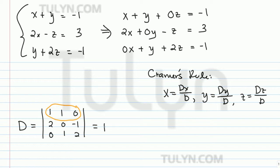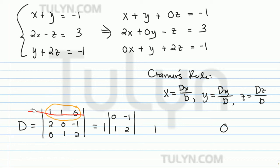How we do expansion of minors is we write down each of the elements and then their minors multiplied. To find the minor of the first term, delete its row and column, and write the 2-by-2 determinant of the numbers left over — that's the first column 0, 1 and second column negative 1, 2. For the second element, the minor is 2, 0, negative 1, 2. The third element is 0, and since 0 times anything is 0, we can just forget about it.